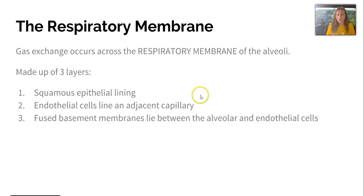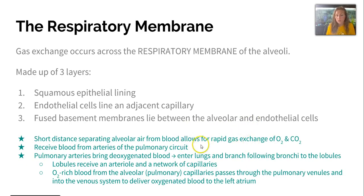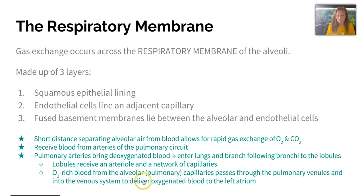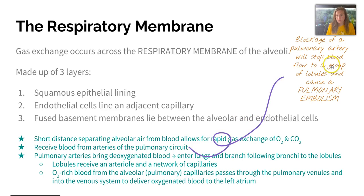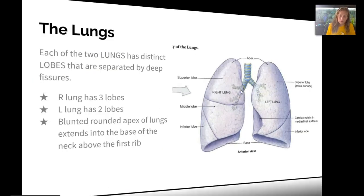The respiratory membrane is where gas exchange occurs at the alveoli. It is made of three layers: a squamous epithelial lining, endothelial cells lining an adjacent capillary, and a fused basement membrane between the alveolar and endothelial cells. This short distance allows for rapid gas exchange. Deoxygenated blood is brought by pulmonary arteries, which enter the lungs and branch following the bronchi to the lobules. Oxygen-rich blood from capillaries passes through pulmonary venules back to the left atrium. Blockage of a pulmonary artery stops blood flow to a group of lobules, causing a pulmonary embolism.